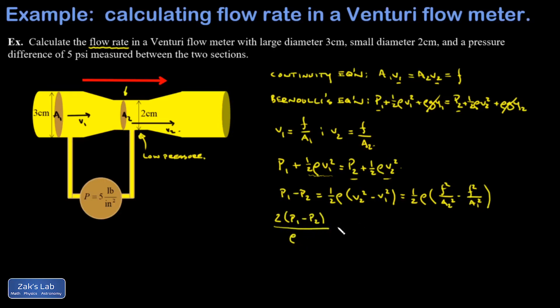So I have two times the pressure difference over the density—and this is water in this case, so it's a thousand kilograms per cubic meter—equals F squared times one over A2 squared minus one over A1 squared.